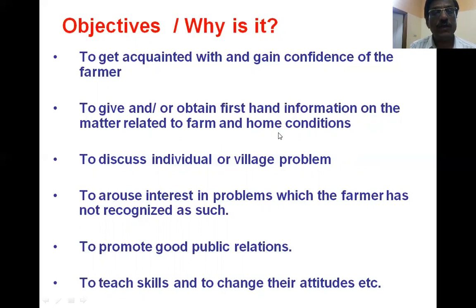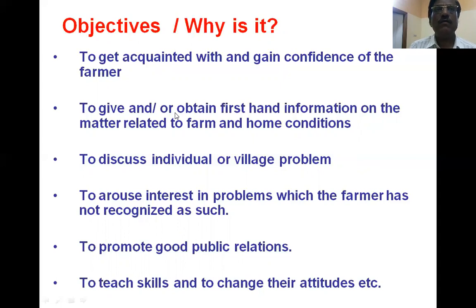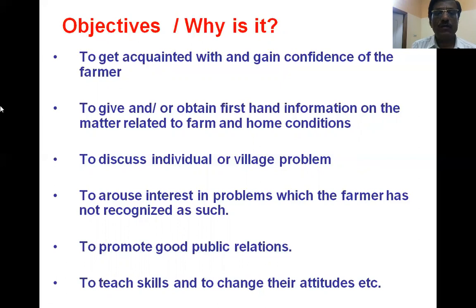The second objective is to give and/or obtain first-hand information on matters related to the farm. It is one of the best methods to give first-hand information to farmers with no middlemen involved. You can directly give information and also obtain first-hand information from farmers by directly seeing the condition of the farmer, the condition of the field, and the condition of the crop.